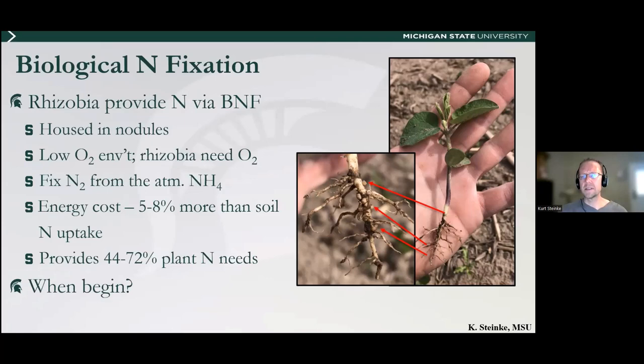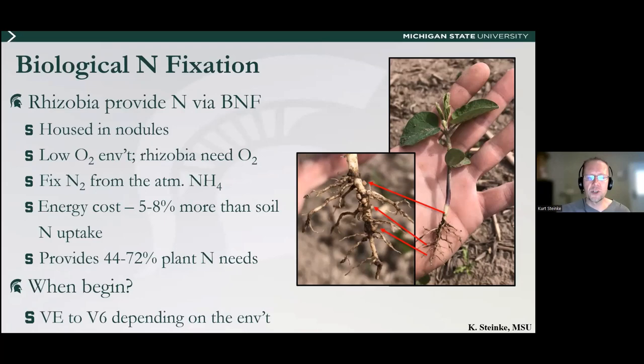When does that fixation process begin? Anywhere between emergence and V6 — that's always the million-dollar question. Over the last two years, we've seen that first nodule form right after emergence. In 2021, when it was drier earlier in the season, nodulation was delayed until about V3 to V4. So there is year-to-year variation.